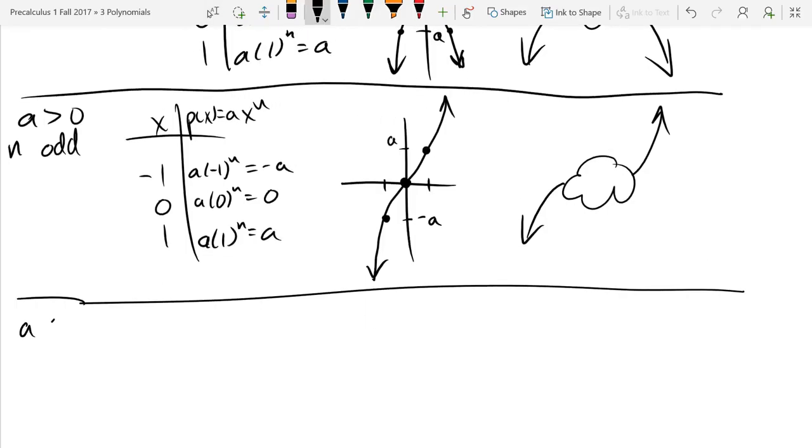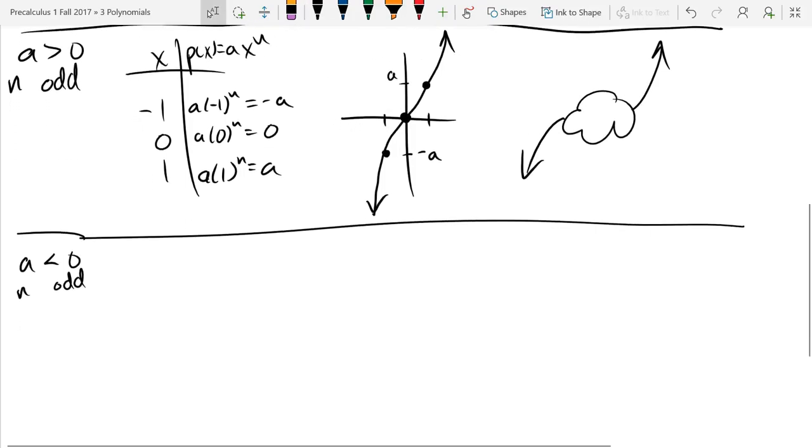So last up, a less than 0, n is odd. All right, one thing I could do is I could just make my table of values again. However, let's think about transformations.